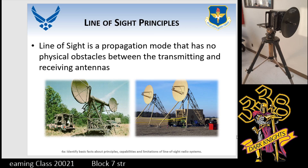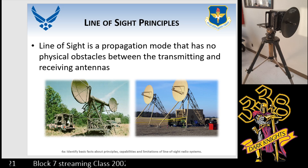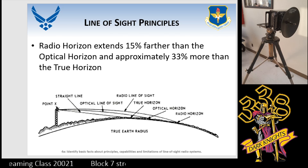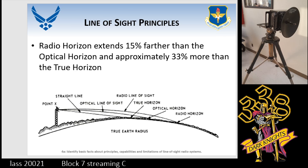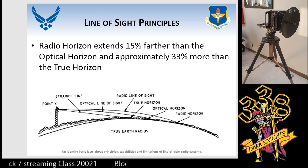Line-of-sight is a propagation mode that has no physical obstacles between the transmitting and receiving antennas. If you do have something in between you and your distant end, you won't be able to talk. But there are ways to overcome that by applying repeaters to your network. The radio horizon extends 15% farther away than our optical horizon, and approximately 33% more than our true horizon.